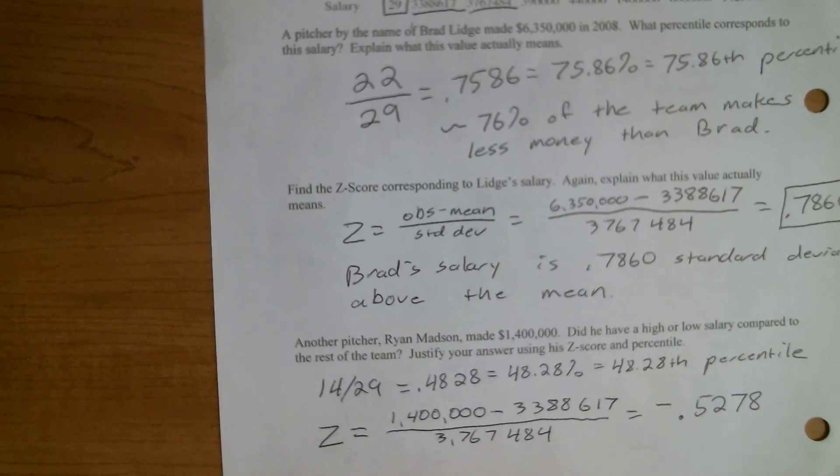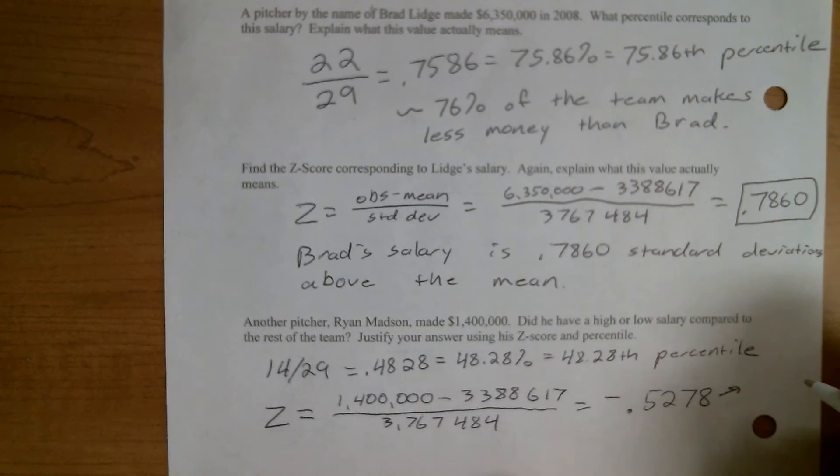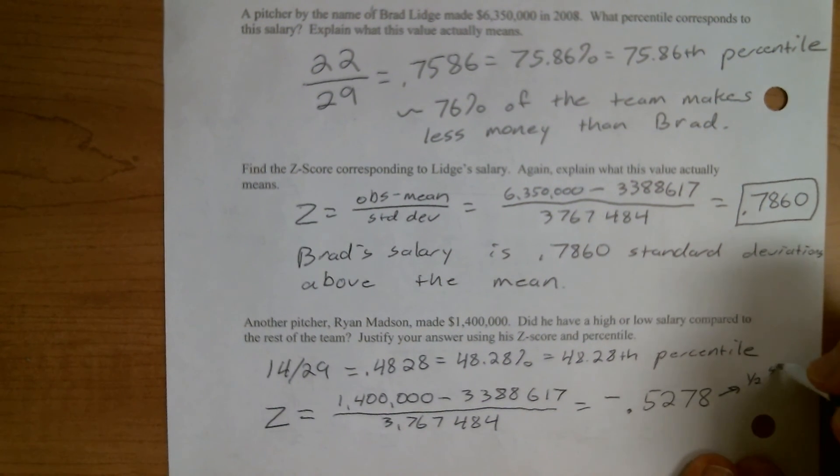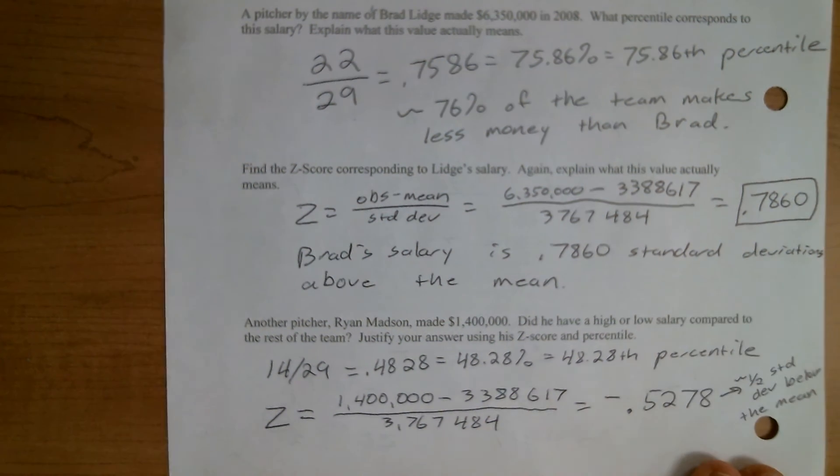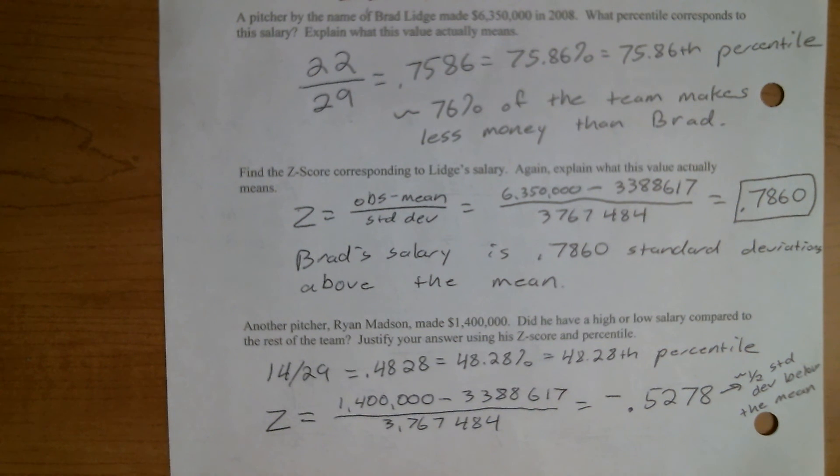So here we've got negative 0.5278. So this is basically roughly half a standard deviation below the mean, right? Because the negative implies that it's below. So we've kind of got two conflicting results here. This one says, yeah, it's basically right in the middle. And this one says, actually, no, you're like half a standard deviation below the mean, which kind of means you're subpar there. So what's going on here and which one is the more accurate measurement?